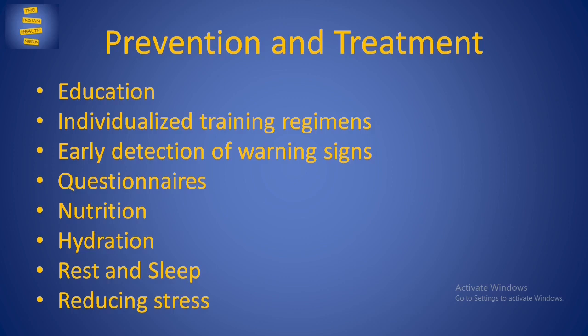Some prevention strategies include education of coaches and athletes about the risk factors and signs and symptoms of overtraining for early detection, individualized training regimens based on individual capacities, avoidance of sudden increments in training load, proper nutrition and hydration, sleep and rest, and management of life stressors.